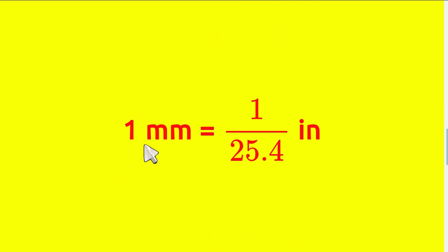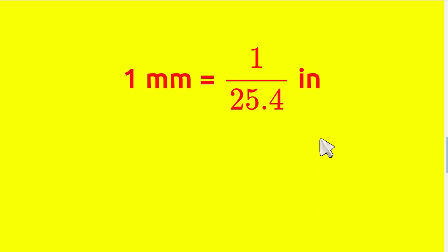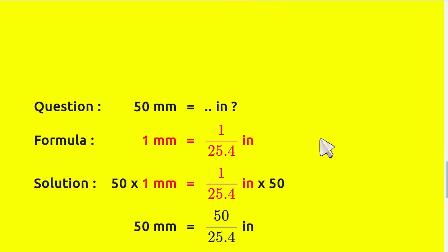To solve this problem, first, we need to know the formula. And the formula is, 1 millimeter equals 1 over 25.4 inch. Okay, that's the formula that we'll use.